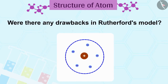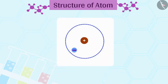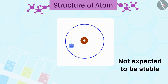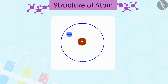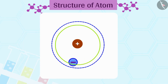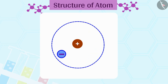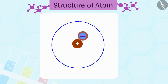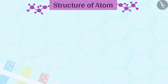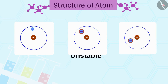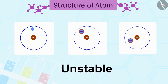Were there any drawbacks in Rutherford's model? Yes. The orbital revolution of the electron is not expected to be stable. Any particle in a circular orbit would undergo acceleration. During acceleration, charged particles would radiate energy. Thus the revolving electron would lose energy and finally fall into the nucleus. And if this were so, the atoms should be highly unstable, and hence matter would not exist in the form that we know.